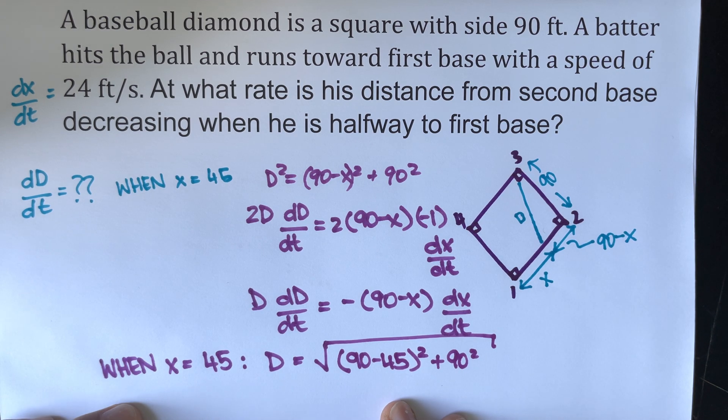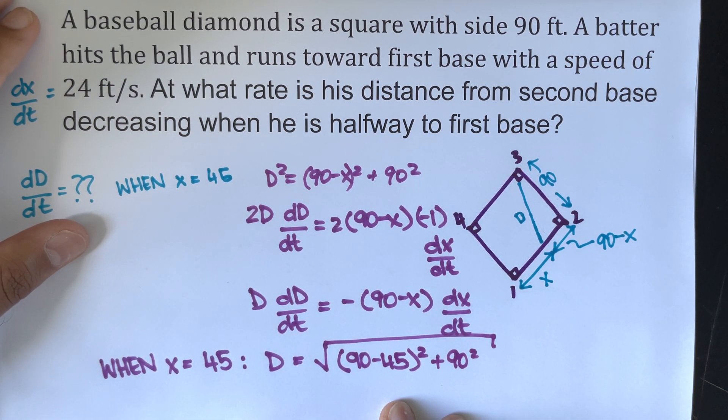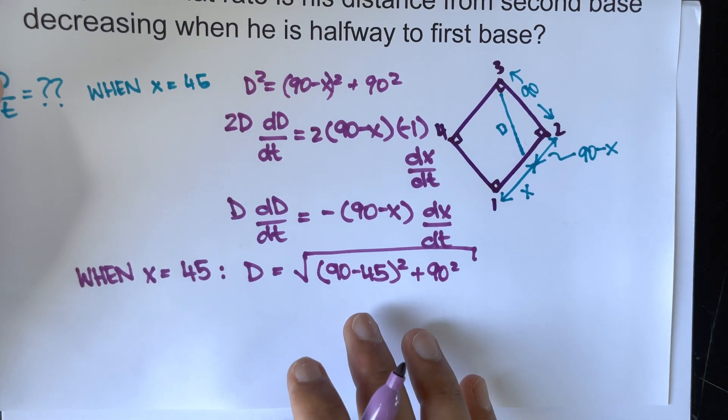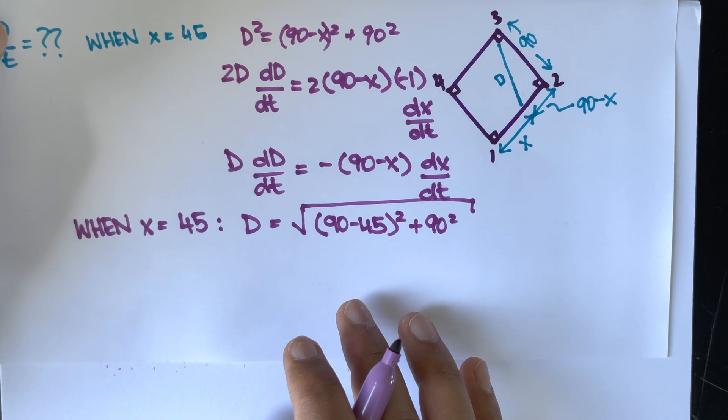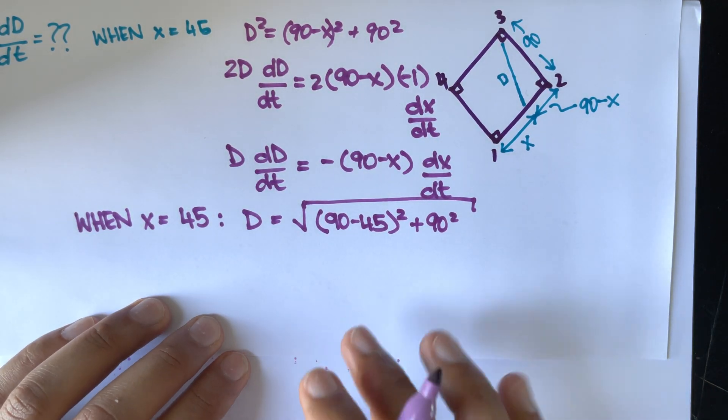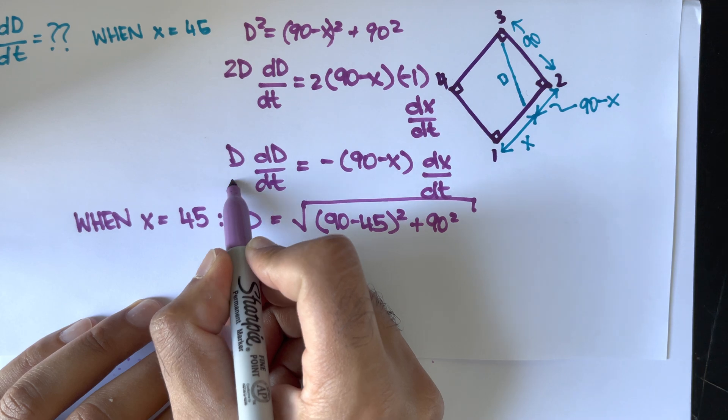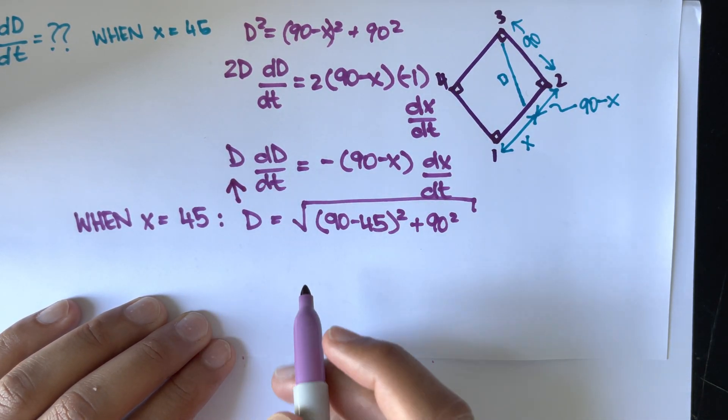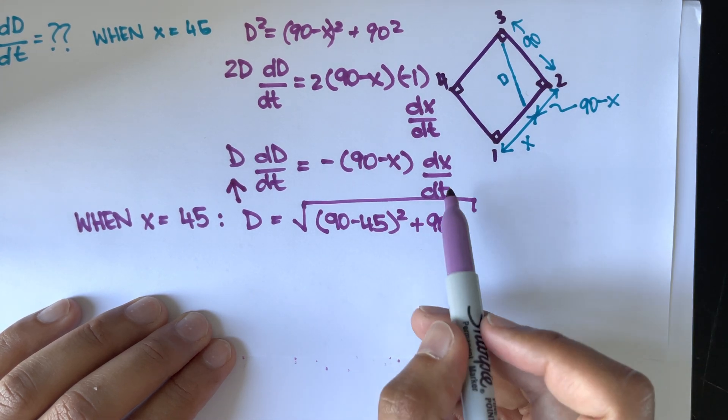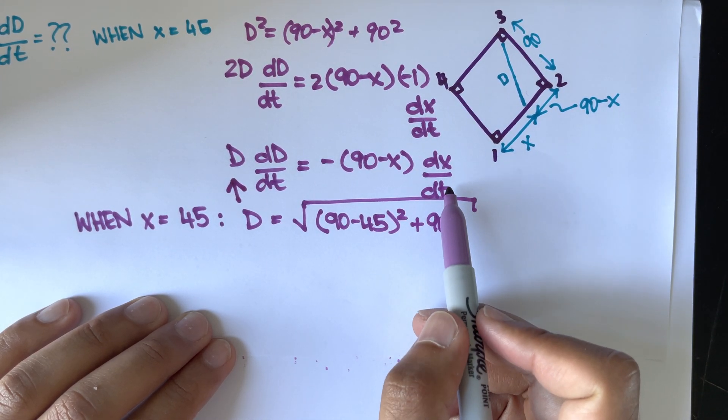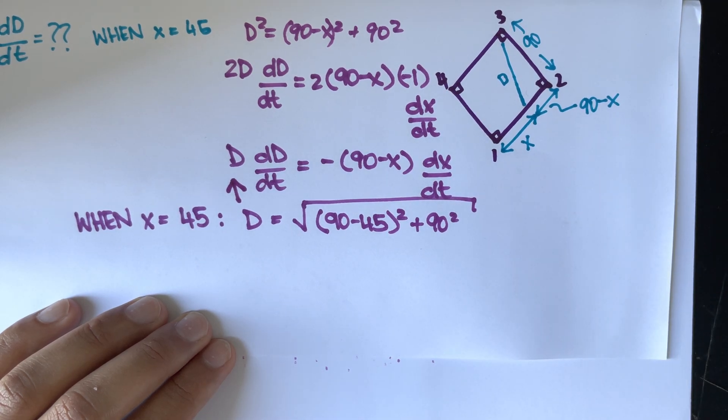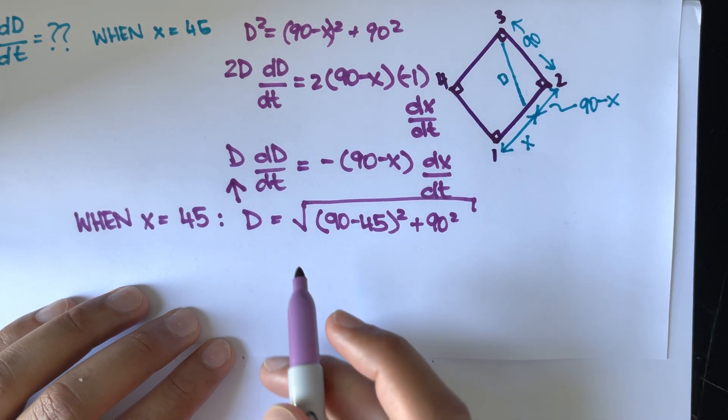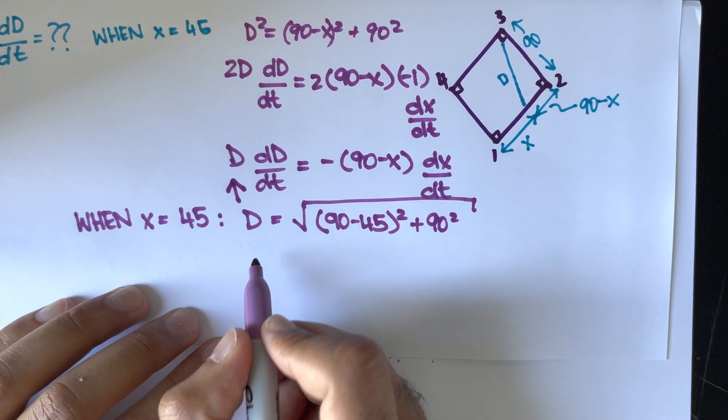Without using a calculator, I'm just going to leave it as is. And by substituting in, by putting that back into this equation we've got here, we can solve for dd/dt, as we will know dx/dt to be 24 from our question.